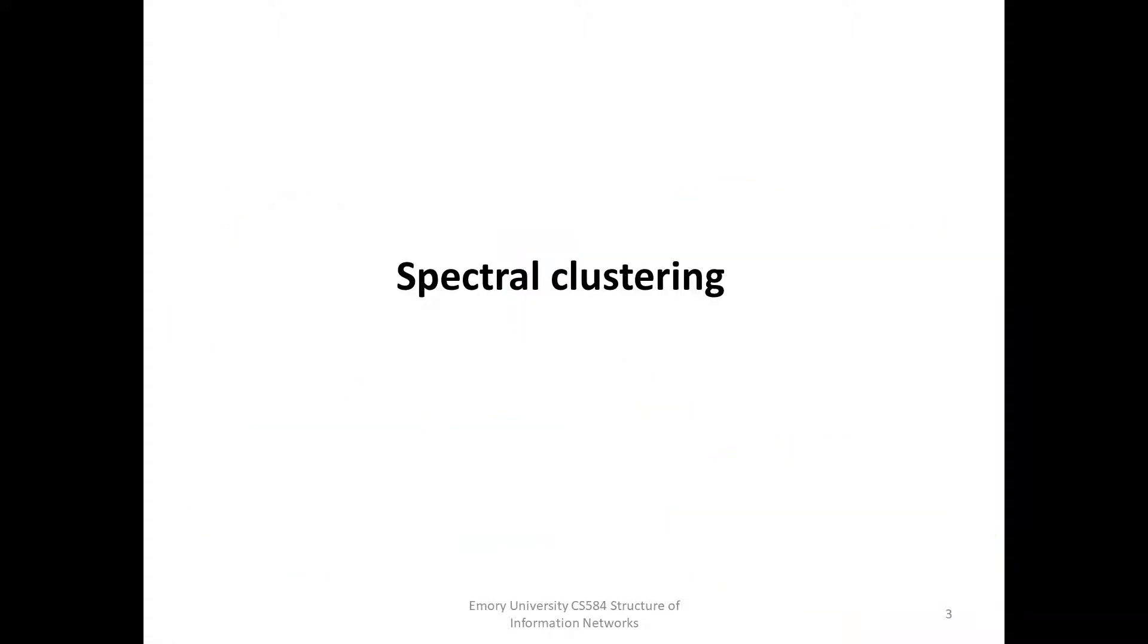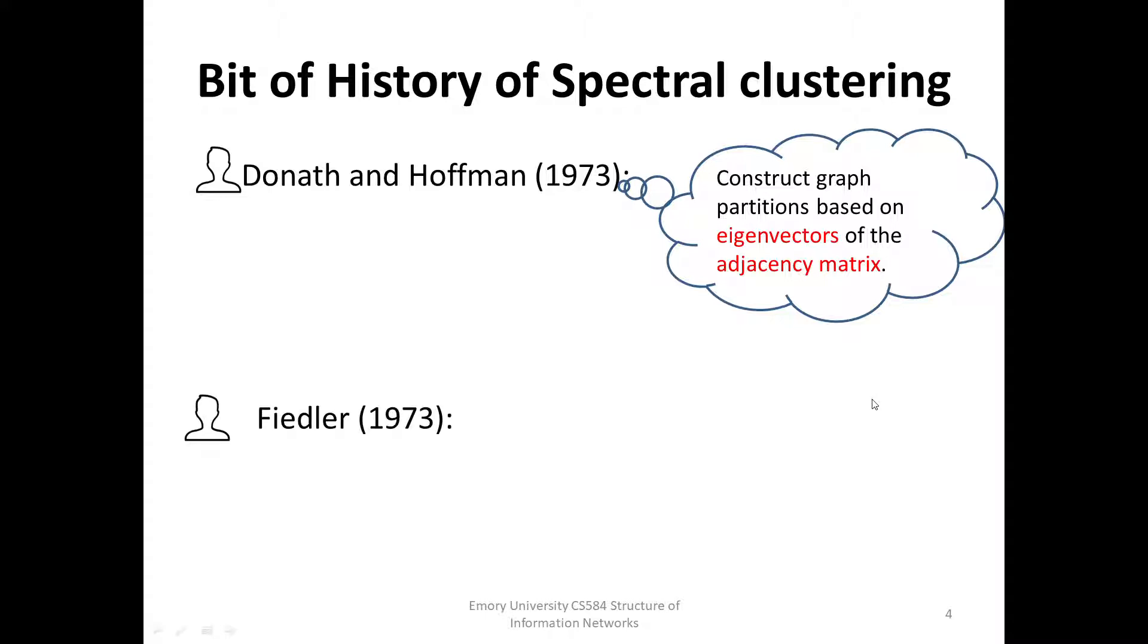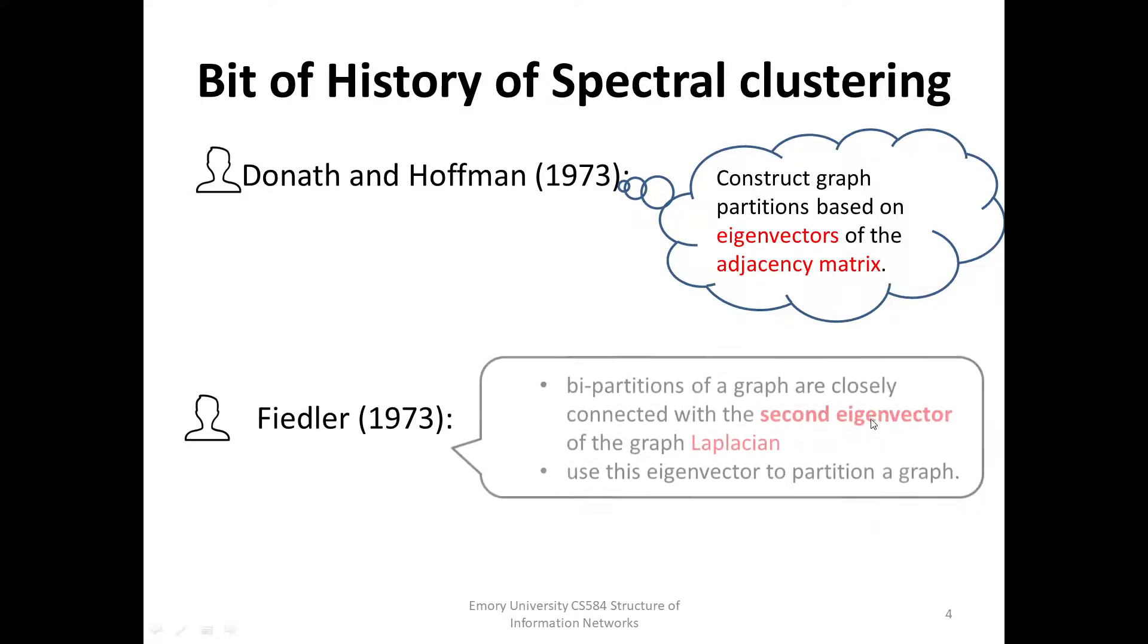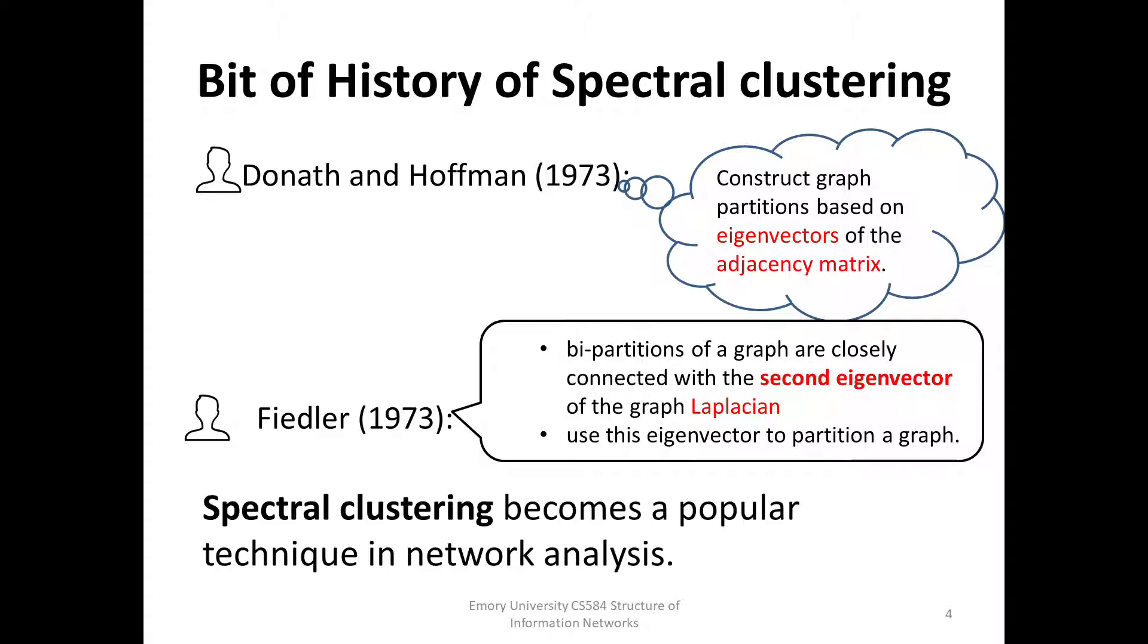Spectral clustering goes back to Donners and Hoffman, who first suggested constructing graph partitions based on eigenvectors of the adjacency matrix. In the same year, Fittler discovered that partitioning of a graph are closely connected with the second eigenvector of the graph Laplacian. And he suggested to use this eigenvector to partition a graph. Since then, spectral clustering has become one of the most popular modern clustering algorithms.